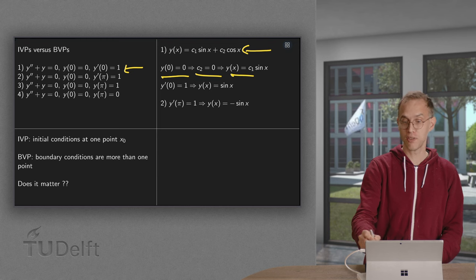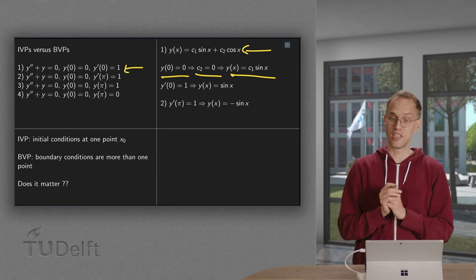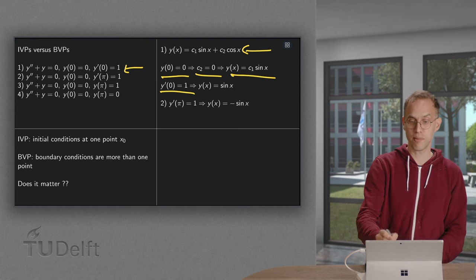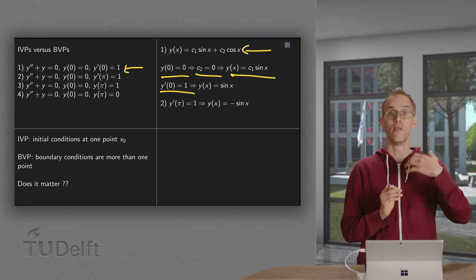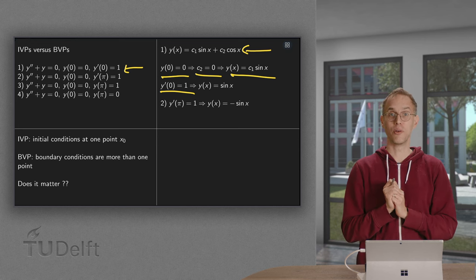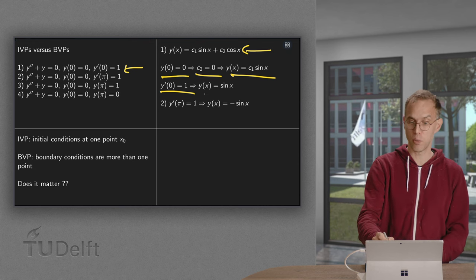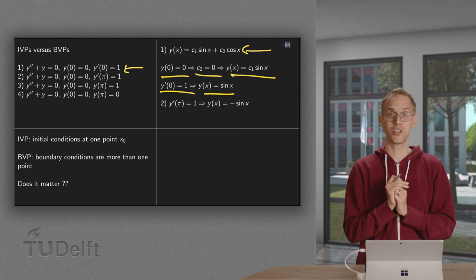So then we find y of x equals c1 times the sine of x. And then we use the second condition. Y prime of zero has to be equal to one. Well, y prime equals c1 times cosine x. If you plug in zero, you get c1 which has to be equal to one. So c1 equals one. And we find one solution. Y of x equals sine x.